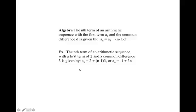A_N is the general nth term. We plug in 2 for A1, so we have 2 plus (N minus 1) — N is our domain, and the A_Ns are the range. Then for D, the common difference is 3. We distribute and get 2 plus 3N minus 3, which simplifies to negative 1 plus 3N.